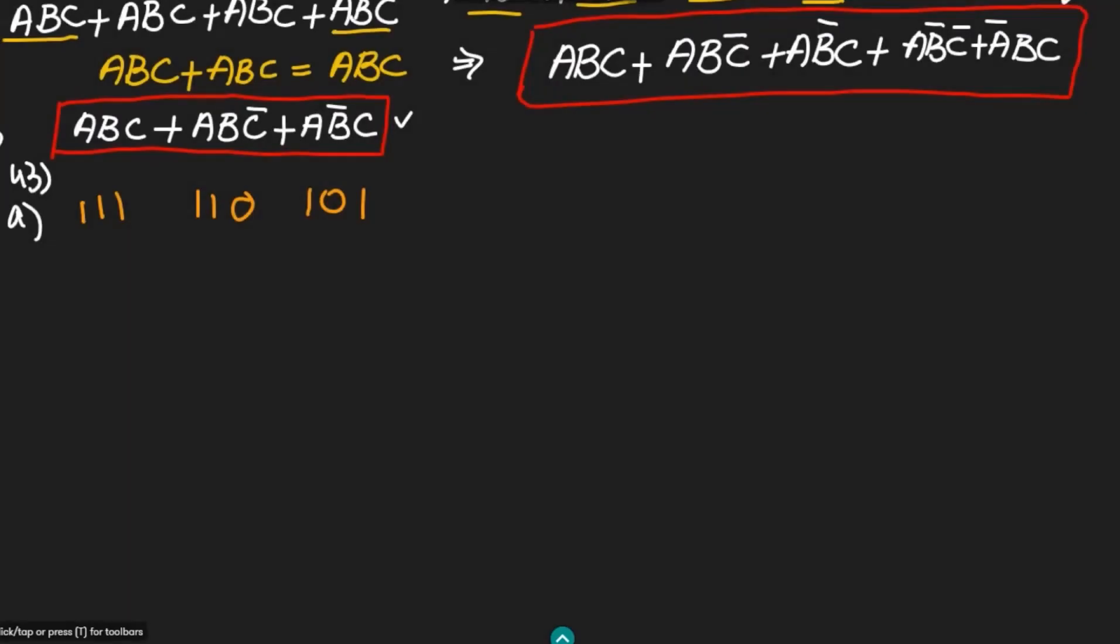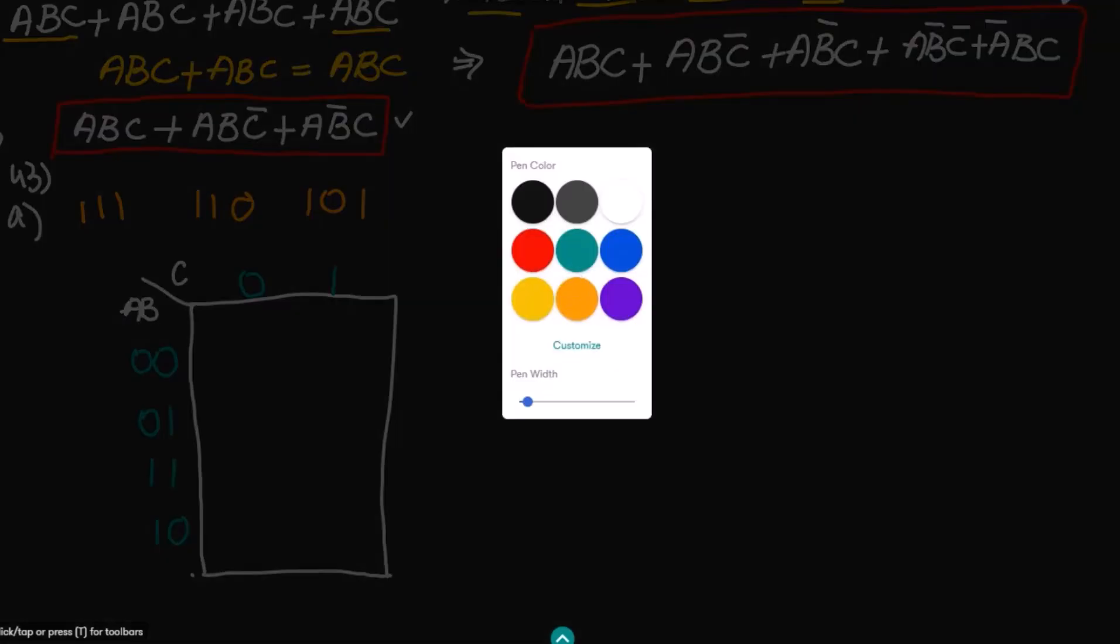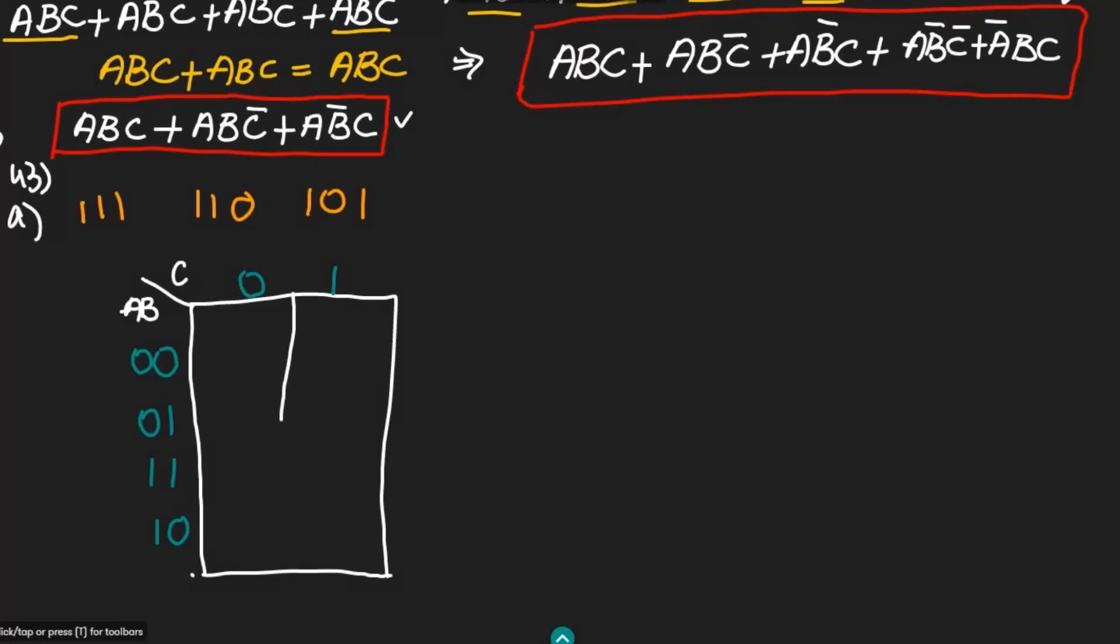After it, let me draw the Karnaugh map for it as we have only three variables here. Drawing it for the three variables which are AB, and here we have C. After it, I have to write the bits combination: 00, 01, 11, and 10, and here 01. Let me draw the remaining cells.